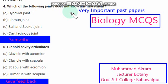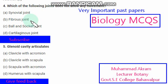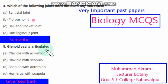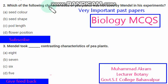Which of the following joints does not allow any movement? The right option is option B, fibrous joints. Glenoid cavity articulates — the right option is option D, humerus and scapula.